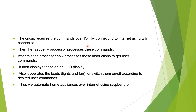The circuit receives commands from IoT by connecting to the internet using a Wi-Fi connector. Then the Raspberry processor processes these commands and processes the instructions to get the user commands, displaying these things on the LCD display. It operates loads — in the sense lights, fan, or any other home appliances — for switching them on or off according to the user commands.